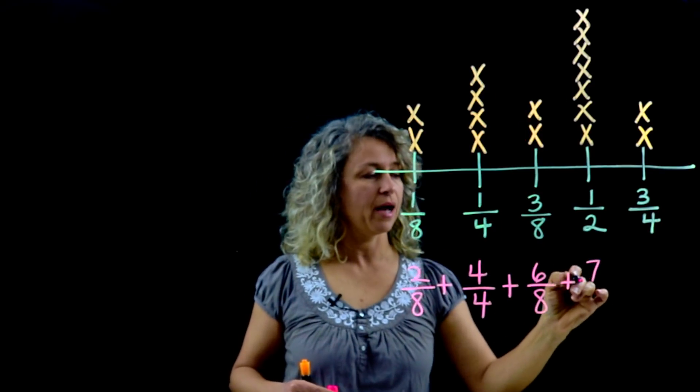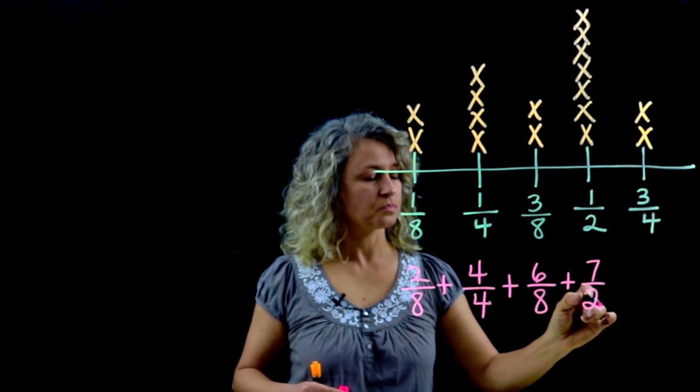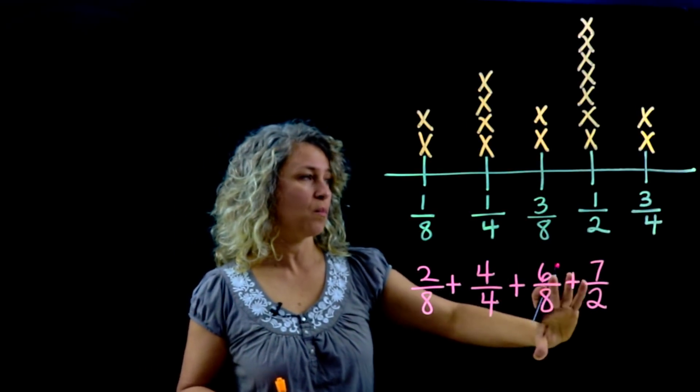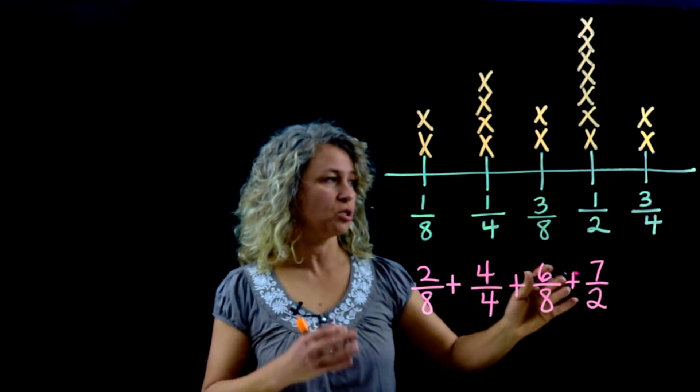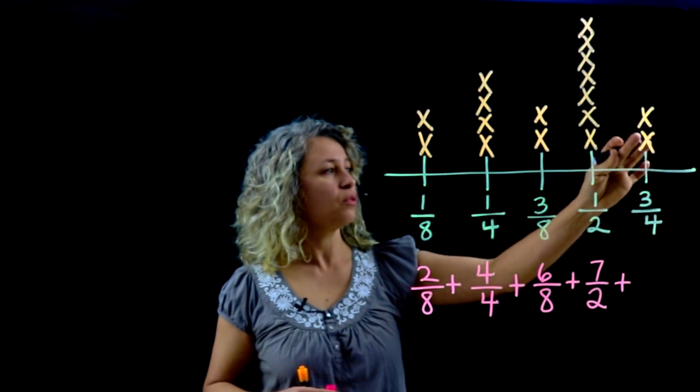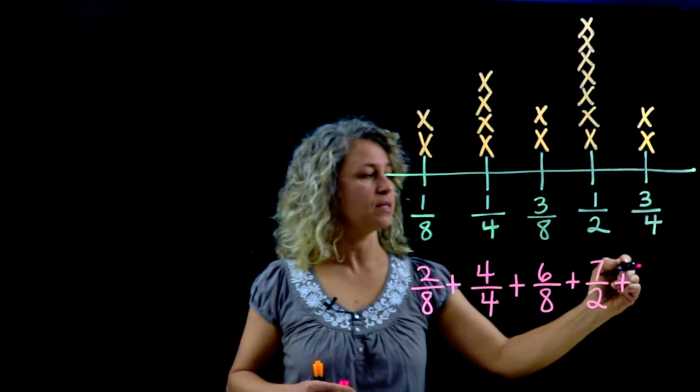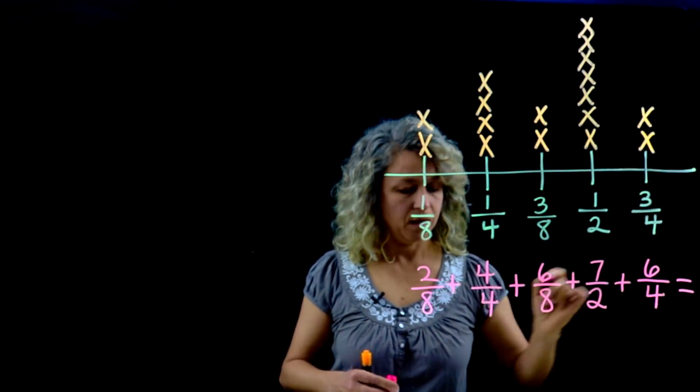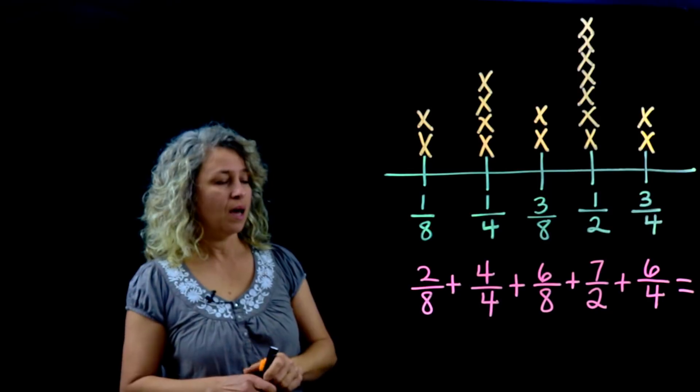Three-eighths plus three-eighths is six-eighths. One-half, so there are 1, 2, 3, 4, 5, 6, 7 halves. I'm going to just leave it improper for the moment. Three-fourths plus three-fourths is six-fourths.